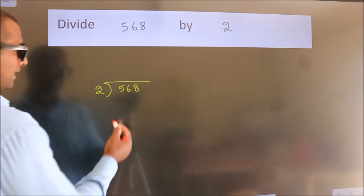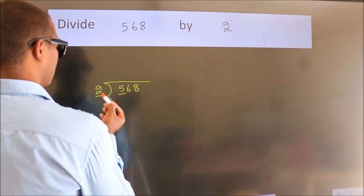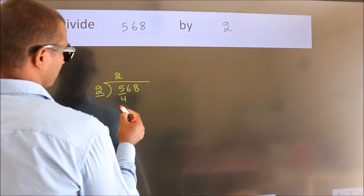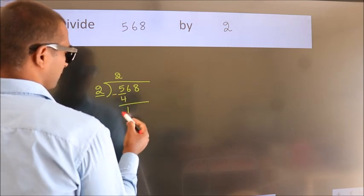here we have 5, here 2. A number close to 5 in the 2 table is 2 times 2, which is 4. Now we should subtract. We get 1.